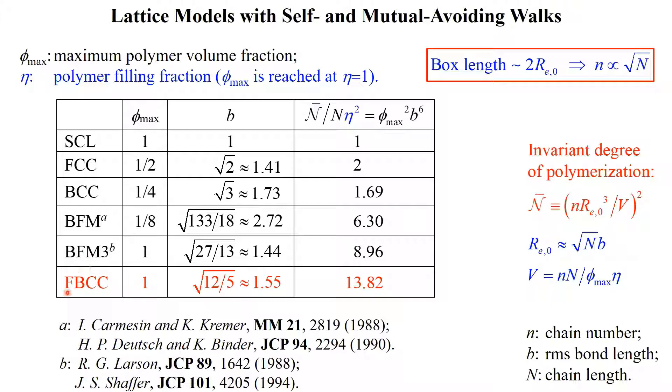As you may have guessed from its name, our FBCC model combines the face-centered and body-centered cubic lattice models. In other words, its only difference from BFM3 is the removal of six bonds of length 1, so it has a total of 20 bond vectors. Note that both FCC and BCC have a phi-max smaller than 1, but our model has phi-max equals to 1. As I explained in the previous slide, we'd like to study the fluctuation effects in block copolymers having n-bar on the order of hundreds. With our FBCC model, this requires only tens of segments on each chain, which is well doable.